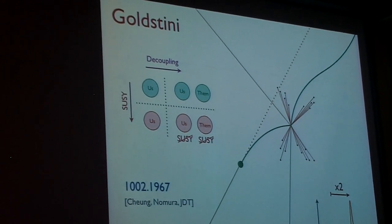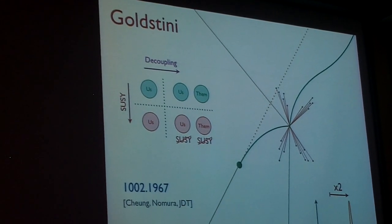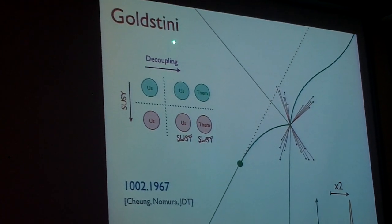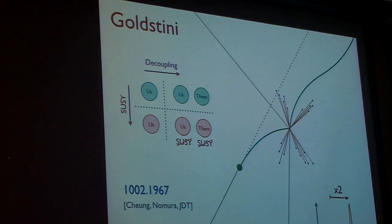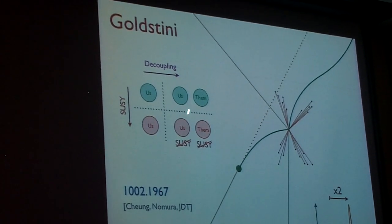The Goldstone fermion coming from spontaneous supersymmetry breaking is called a goldstino. Goldsteini—the 'i' is the Italian plural. Goldsteini, the idea that supersymmetry could be broken multiple times. That's what this picture is, and I'm going to explain that to you more.